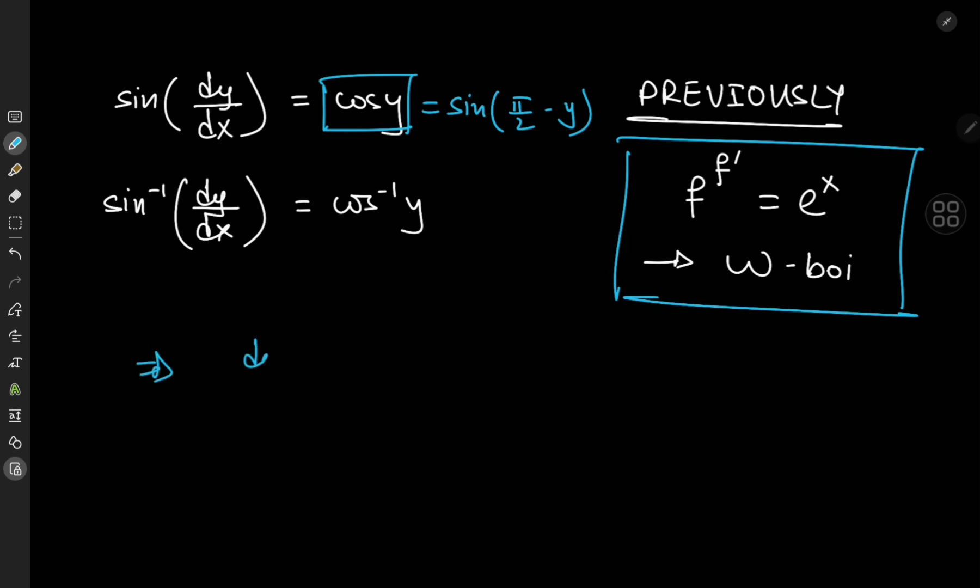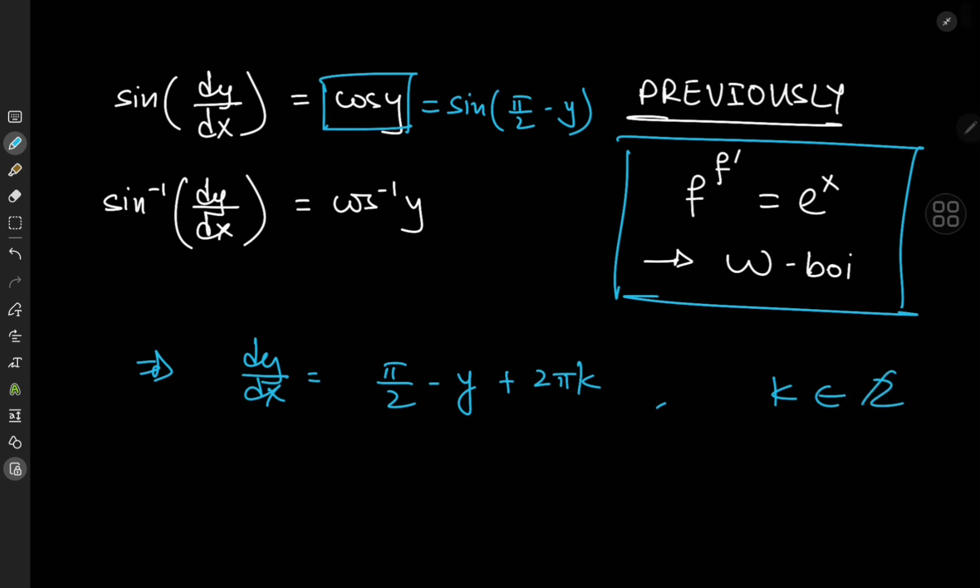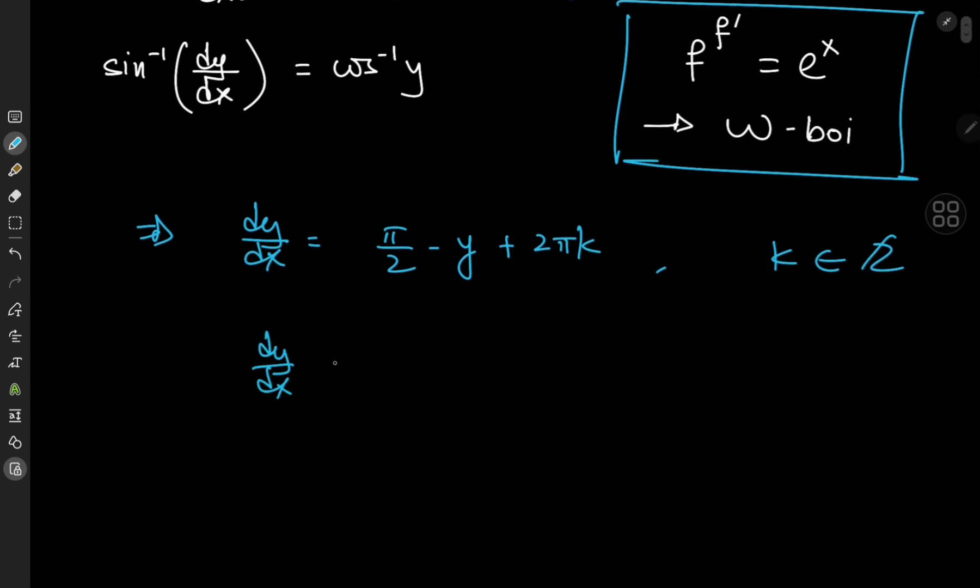So we can write that dy by dx equals pi by 2 minus y, but the sine function is 2 pi periodic, that means we have an extra factor of 2 pi k, where k is an integer. So writing this as dy by dx plus y equals, factoring out the pi by 2, gives me 4k plus 1 times pi by 2.